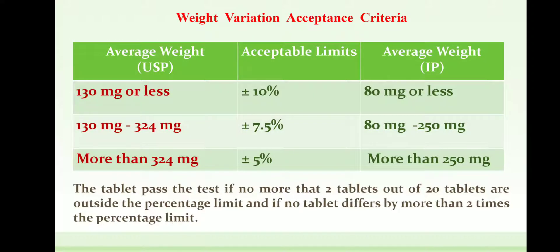Based on tablet weight and deviation, USP and IP follow different criteria. According to the USP, for tablets weighing 130 mg or less, the acceptable limit of deviation is ±10%. For tablets weighing 130 mg to 324 mg, the acceptable limit is ±7.5%. For tablets weighing more than 324 mg, the acceptable limit of weight variation is ±5%.